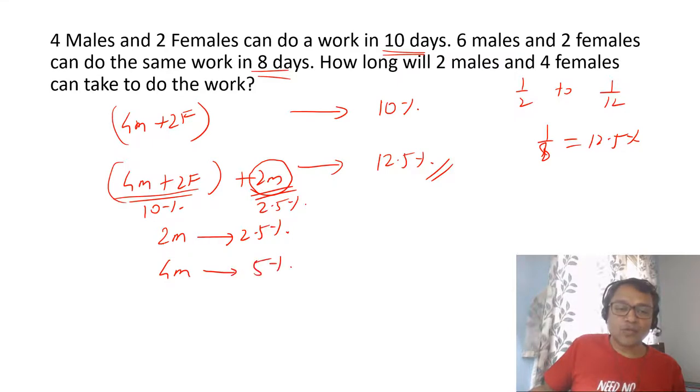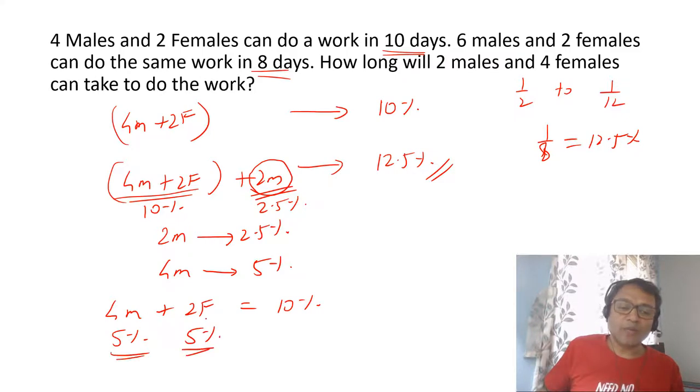Automatically, four males will do 5 percent work. Two males do 2.5, four males do 5 percent. We know four males plus two females is 10 percent, from which four males do 5 percent. That means two females will do 5 percent work. So I've got the breakup of male and female.